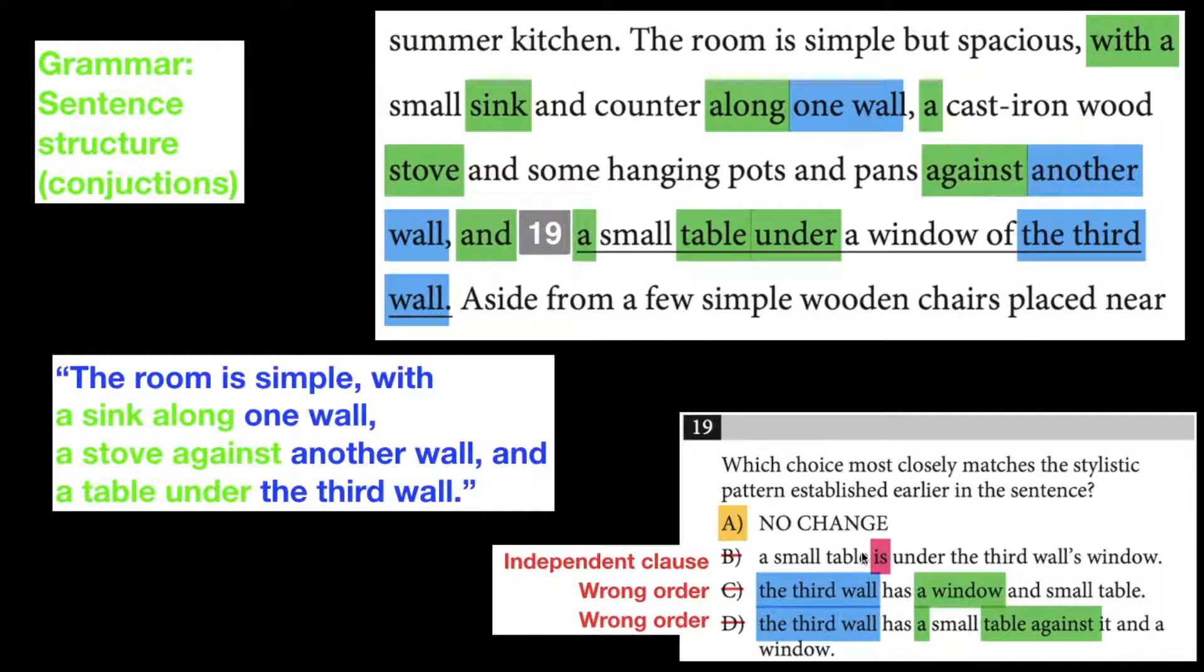B, a small table is under the third wall's window. That turns this into an independent clause, and we can't have that. And there's no verb here. It doesn't say the word is in the others, so we shouldn't introduce the word is here.